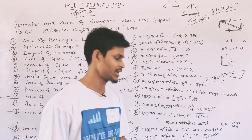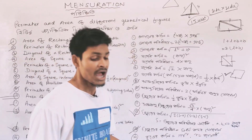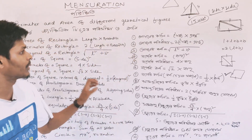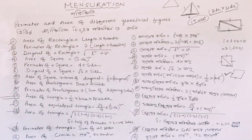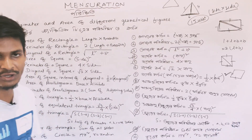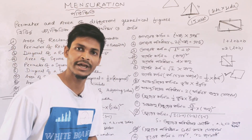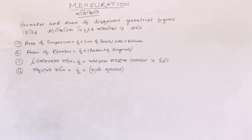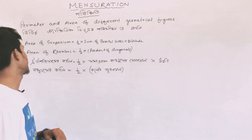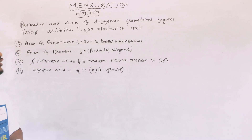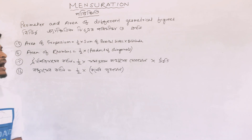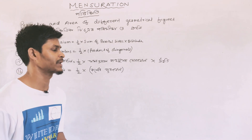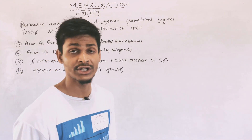Area of circle formula is pi r squared. Next, area of trapezium and area of rhombus. Area of trapezium is half into sum of parallel sides into altitude.